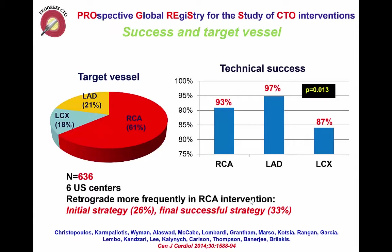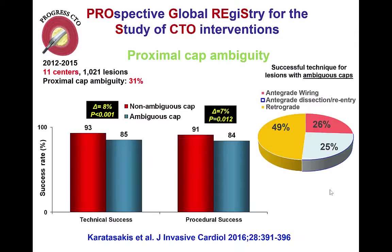Circumflex CTOs have lower success in general than other vessel CTOs. In the PROGRESS CTO registry, LAD had 97% success, whereas circumflex CTOs had about 10 points less at 87% success. This is likely a combination of more tortuosity in the circumflex, as well as lack of interventional collaterals, as was the case in this particular patient.